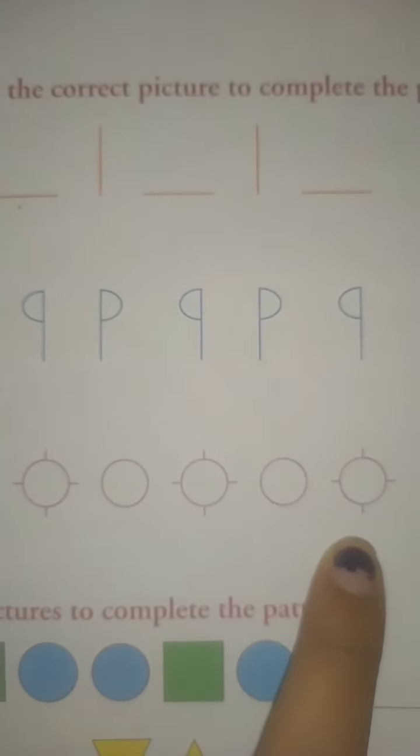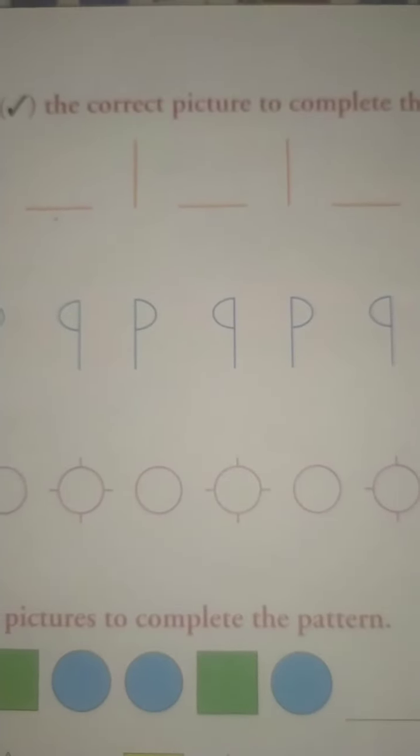Circle, circle with 4 lines, circle, circle with 4 lines. So what would be the next? Yes, the next will be simple circle. So you tick here.